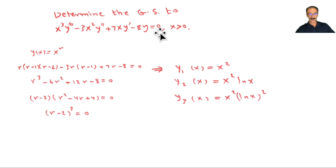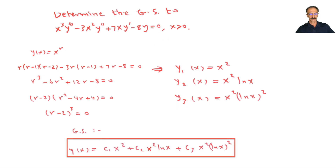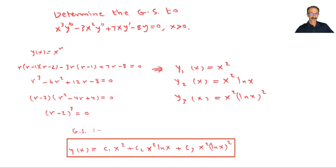Since there is no non-homogeneous term, there is no yp to worry about. The general solution is c₁x² + c₂x²·ln(x) + c₃x²·(ln x)². I'm focusing on more examples with less algebra detail so you can see the patterns clearly. Timestamps for each example are in the description.